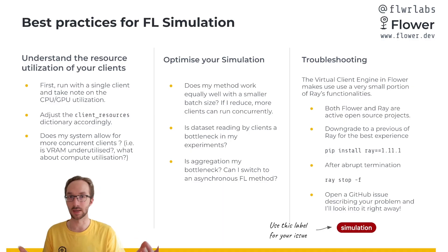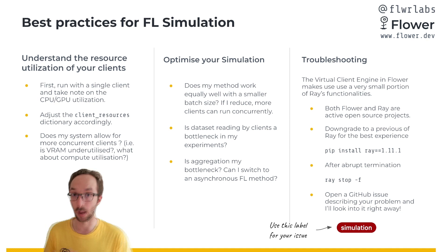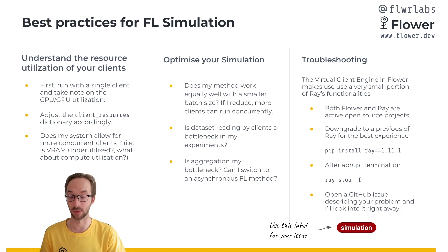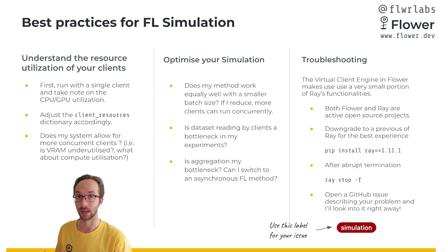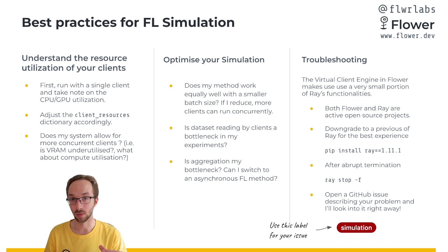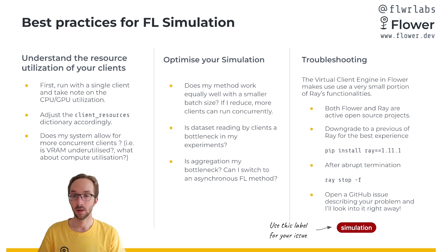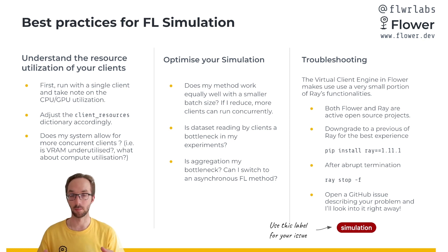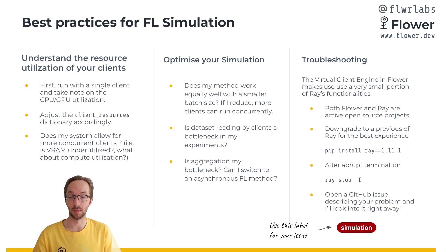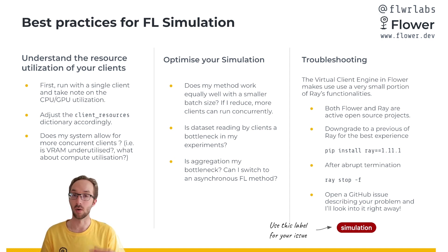First, we need to understand the resource utilization of our clients. We already looked into this in the previous part of the tutorial — we were looking at the VRAM usage of a client, and based on that we were able to adjust the GPU resources that the virtual client engine allocates to every client. Sometimes if we want to optimize our simulation even further, we need to look into other potential bottlenecks. For instance, maybe our model is bigger, so one idea would be: can I reduce the batch size during local training on the client side so I can pack more clients and train them concurrently?